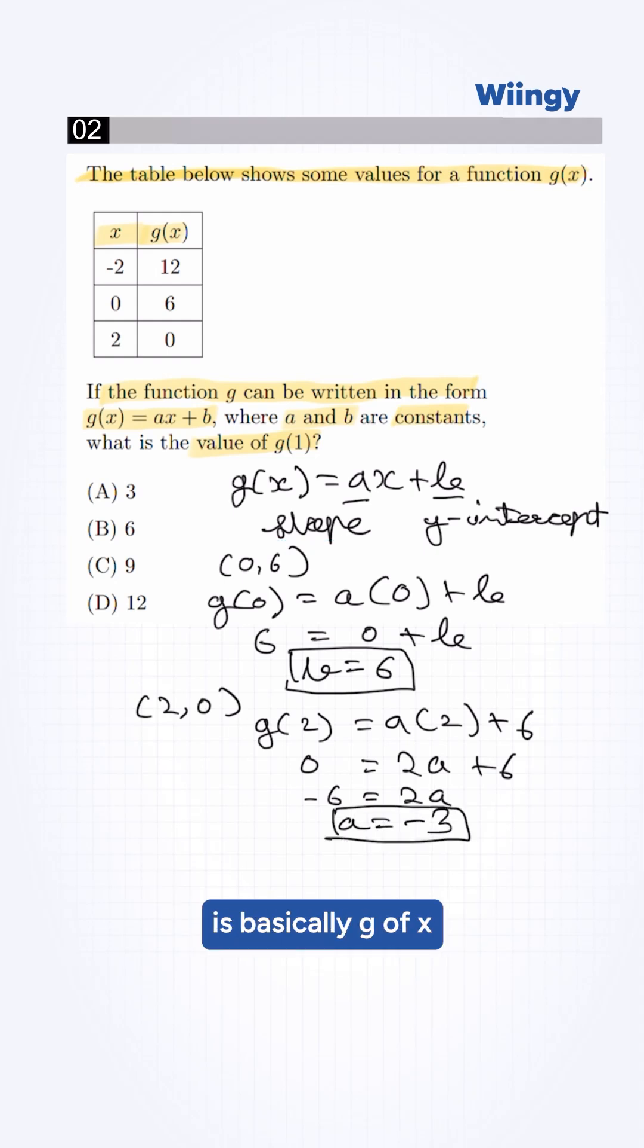Now our equation is basically g of x is equal to minus 3x plus 6. We need to find the value of g of 1 here. So putting g of x is equal to 1, this equation will be minus 3 into 1 plus 6, which is equal to 3.